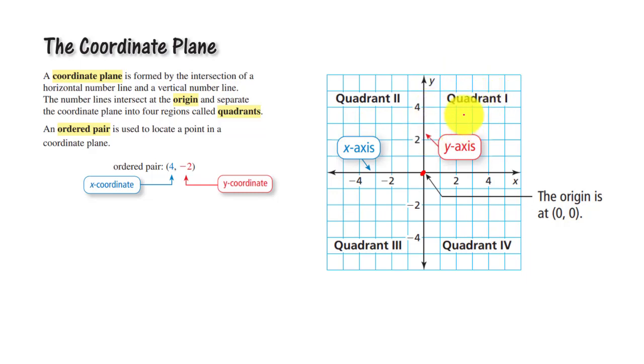So this region is called quadrant one. This is quadrant two and this is quadrant three. This is quadrant four. Now we will see what is ordered pair.